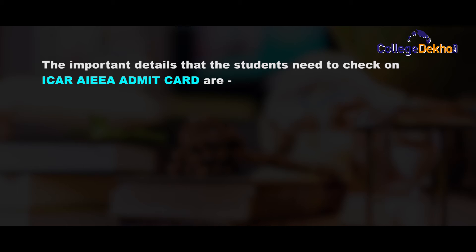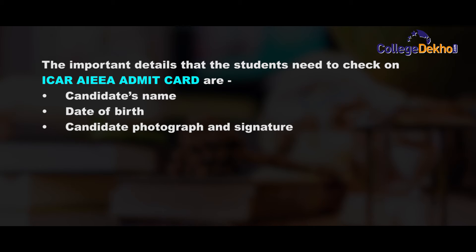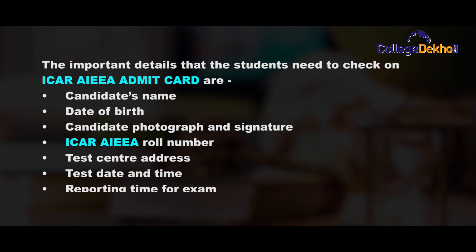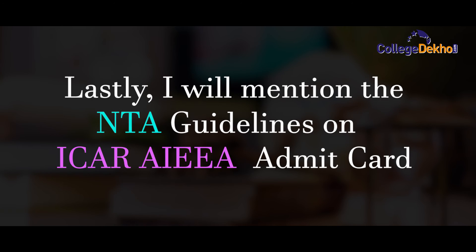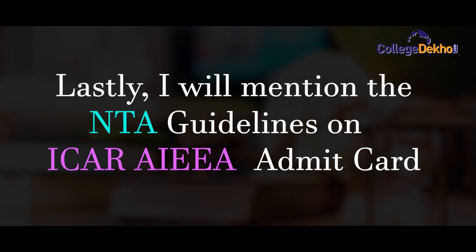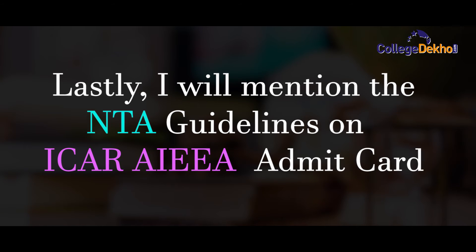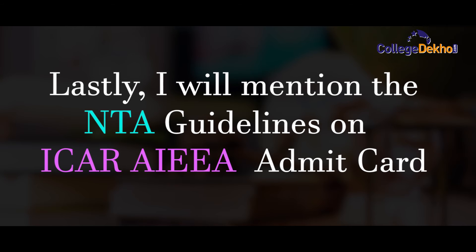The details that students need to check on the ICAR AIEEA admit card are: candidate's name, date of birth, candidate photograph and signature, candidate's roll number, test center address, test date and time, reporting time for exam, and instructions for the exam.